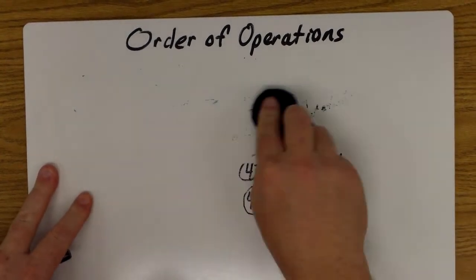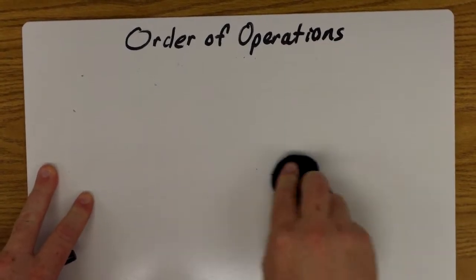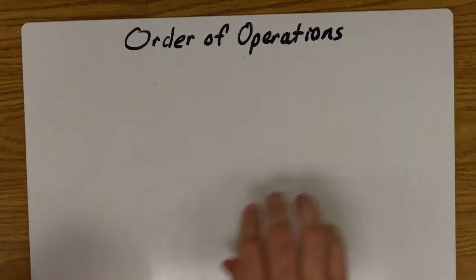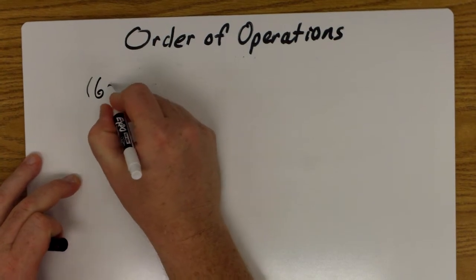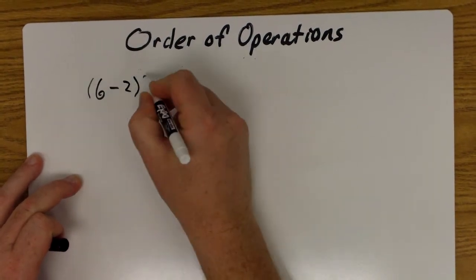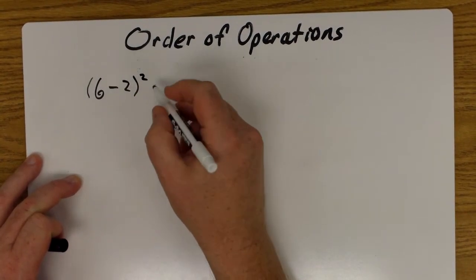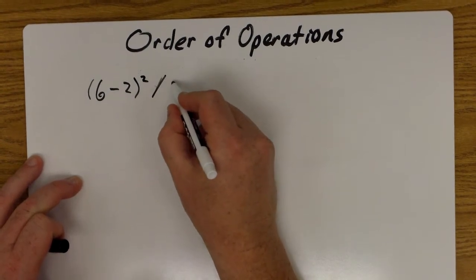Okay, a couple examples here on order of operations. Let's start off with six minus two squared, divided by two.